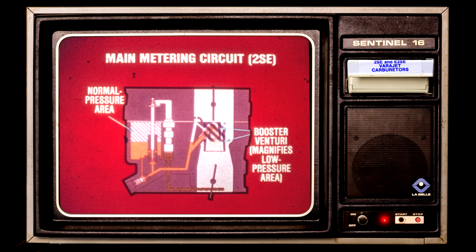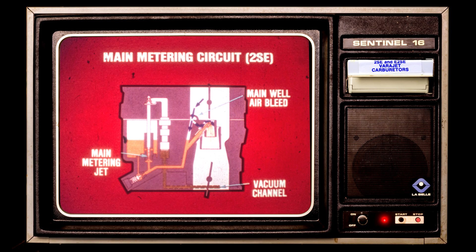The main metering circuit controls fuel flow at part throttle and cruising speeds. Airflow creates a low pressure area in the venturi, magnified by the booster venturi. Fuel is pushed from the normal pressure area in the float bowl to this low pressure area, flowing through the main metering jet and main well toward the venturi. Air enters through the main well air bleeds and mixes with the fuel. The power piston position, controlled by vacuum, determines the amount of fuel passing through the main metering jet.